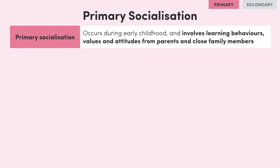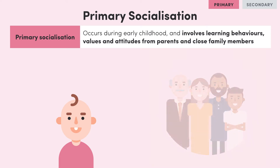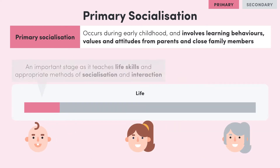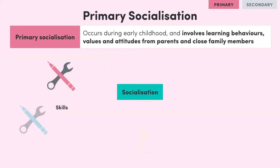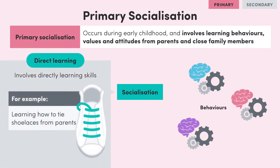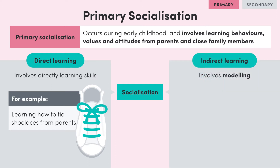Primary socialisation happens to us when we are young children living in the family home. So primary socialisation involves learning behaviours, values and attitudes from parents and other close family members. This is a really important stage in our greater social learning as it teaches us important life skills and shows us how to appropriately socialise and interact with other groups. Because socialisation encompasses such a wide range of skills and behaviours, primary socialisation can involve directly learning skills — like how to tie your shoelaces from your parents — or indirect learning. This indirect learning often involves modelling, which we looked at in the learning and motivation topic.